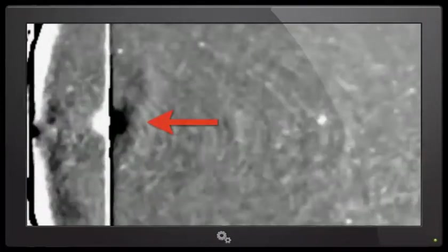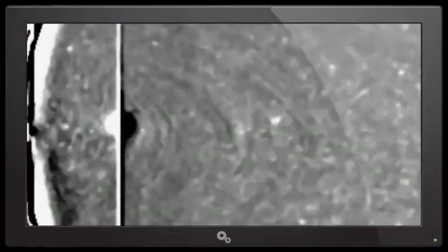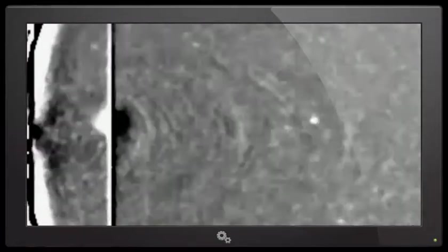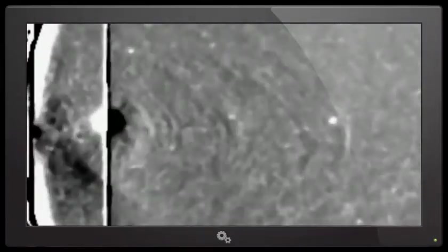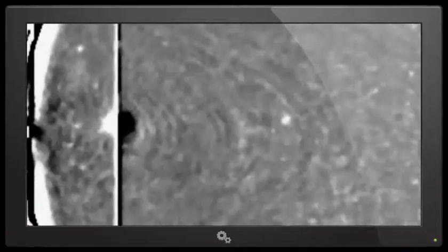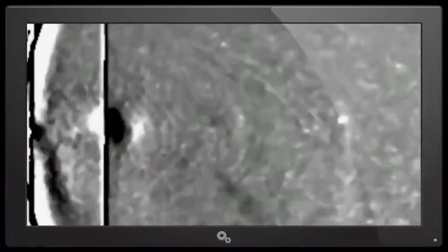This is another piece of SECCHI footage. I want you to pay very close attention to what happens to the Earth. What you're looking at, the straight line coming down through the sphere, that's Earth. The sun is off to the left. But I want you to see how the Earth seems to jump. It almost moves backwards, like something pulled the entire planet backwards.